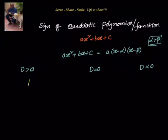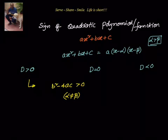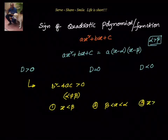In the first scenario, we have b² − 4ac greater than zero, and we know that in this case alpha is not equal to beta. If alpha is not equal to beta, then there are three sub-scenarios that can arise: one where x is less than beta, the second where x is between beta and alpha, and the third where x is greater than alpha.